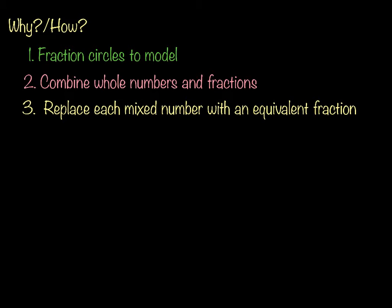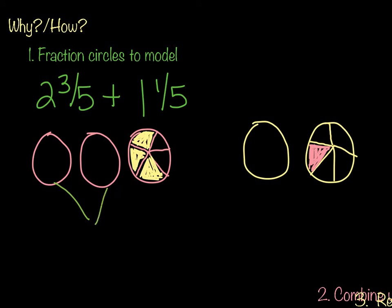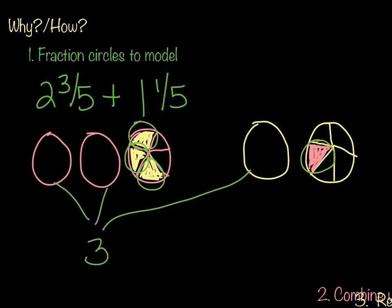So basically what you would do in this model is you're going to pull your wholes together. So I have 1 whole plus 1 whole plus 1 whole. That equals 3. And then we're going to take our fifths, and we're going to add those together. So 1 fifth plus 1 fifth plus 1 fifth plus 1 fifth plus 1 fifth is going to give me 4 fifths. So the answer to this particular equation would be 3 and 4 fifths. So this is using fraction circles to model.